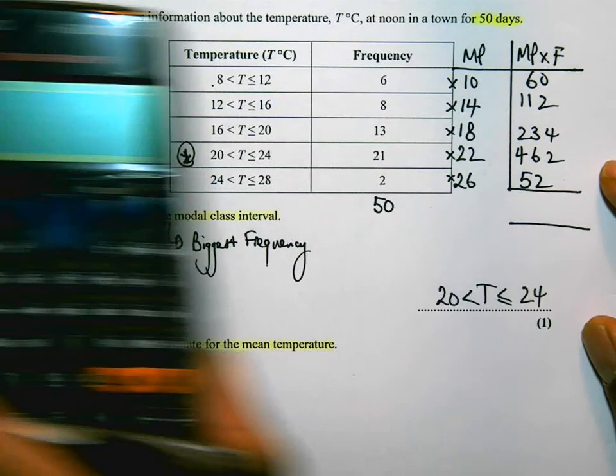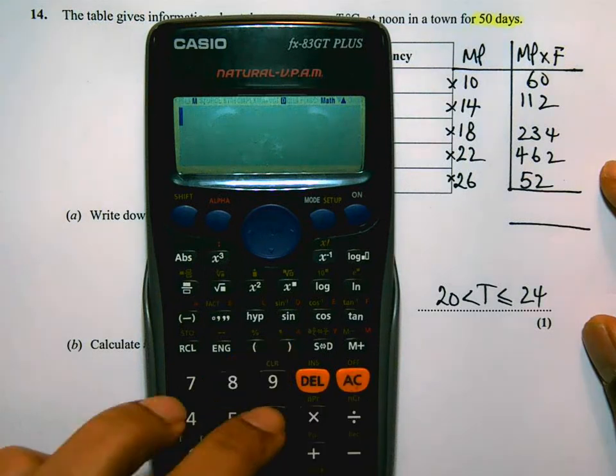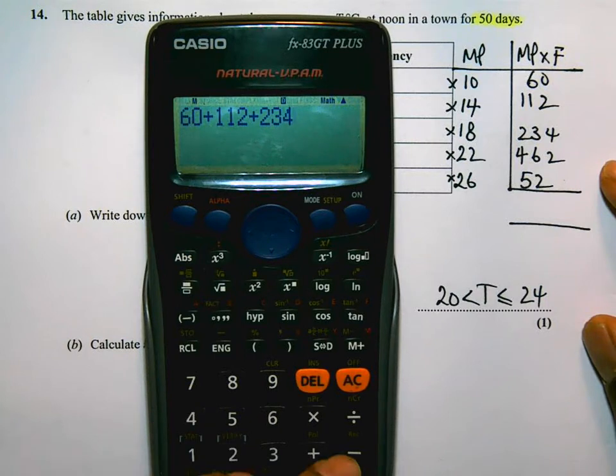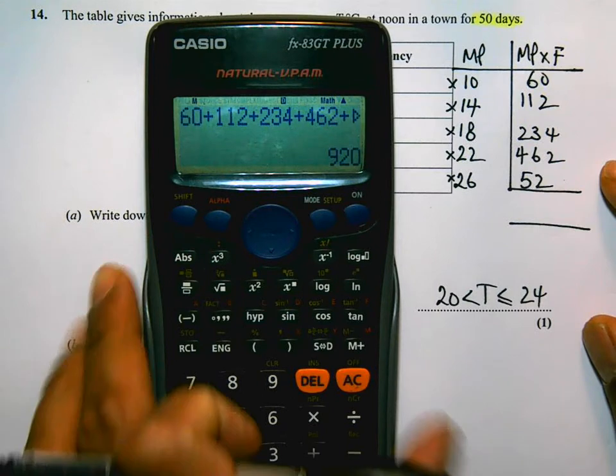60 plus 112 plus 234 plus 462 plus 52 equals 920.